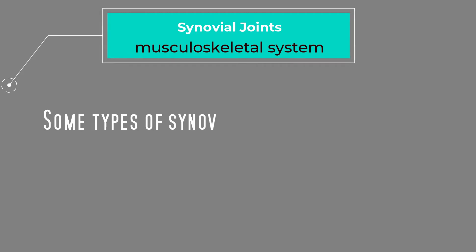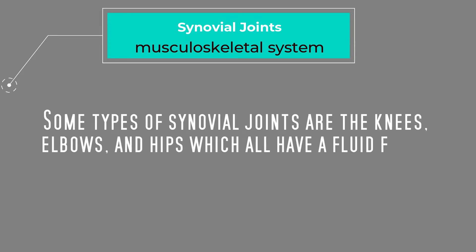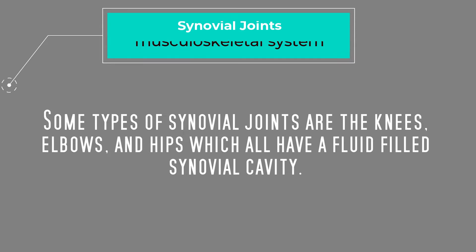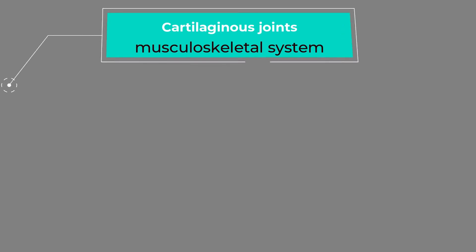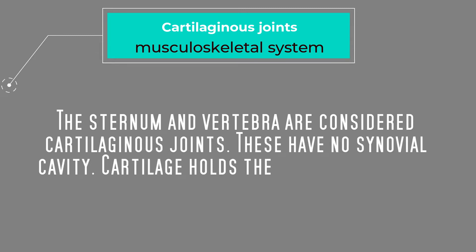Secondly, let's talk about joints, tendons, and ligaments. Joints can be broken down into three different types: synovial joints, cartilaginous joints, and fibrous joints. Some different types of synovial joints consist of the knees, elbows, and hips, which all have a fluid-filled synovial cavity. The sternum and vertebrae are considered cartilaginous joints. These have no synovial cavity and cartilage holds these joints together.